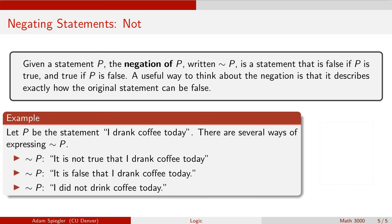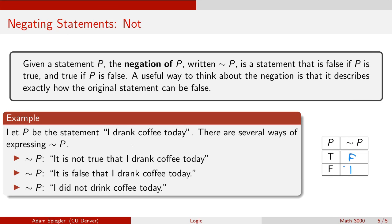One way to think about negation is that it describes exactly how the original statement can be false. If the original statement was 'I drank coffee today,' how could that be false? It would be false if I did not drink any coffee today. The truth table for negation is straightforward: if P is true, then the negation of P is false; and if P is false, then the negation of P is true.